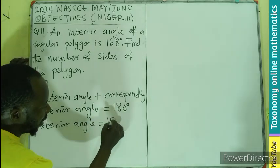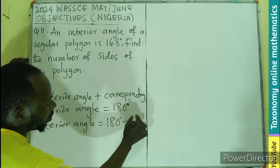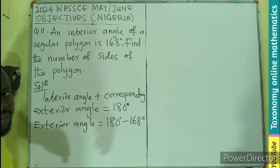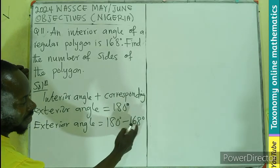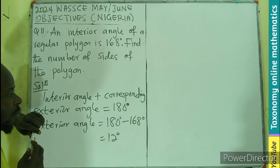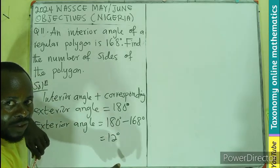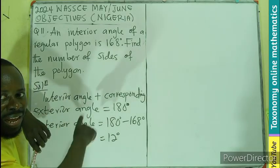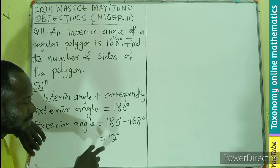...is going to be 180 degrees minus 168 degrees, and that gives us 12 degrees. This is the corresponding exterior angle that forms a straight line with the interior, which will be 12 degrees.